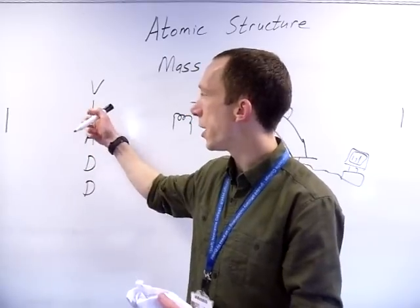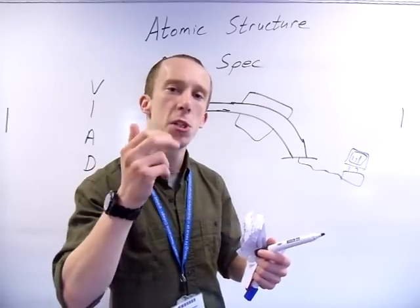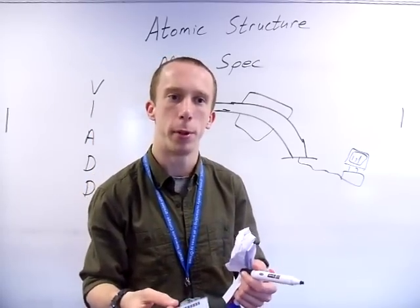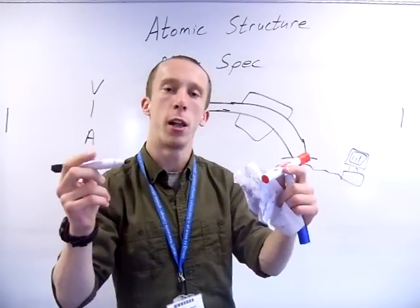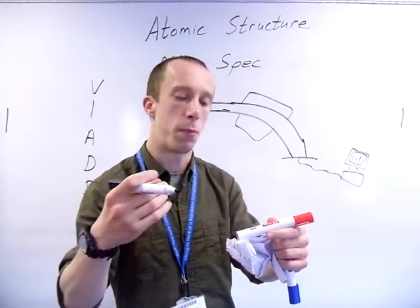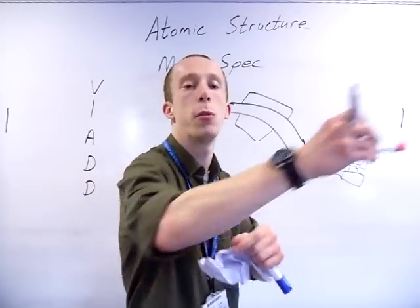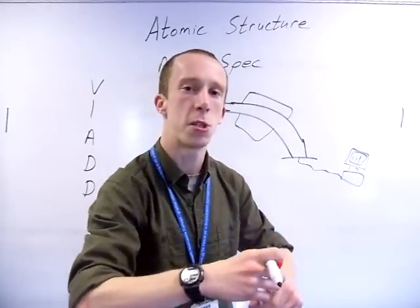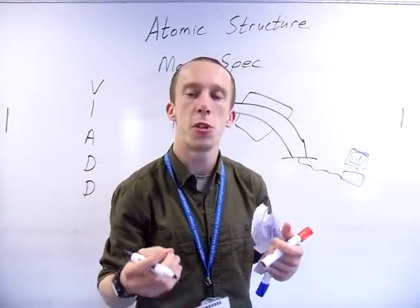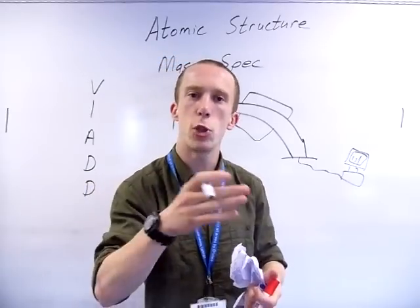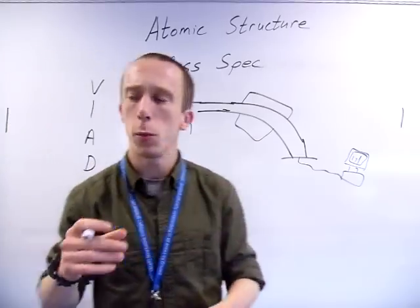Next stage: ionisation. This is using an electron gun, and what it does is bombard a beam of high energy electrons at your sample. These electrons come flying in, and the electrons in the outer shell of whatever you're putting through - atom, molecule, etc. - come so close that the repulsion is extremely high and they smack each other off into open space. With that you've turned your species into a single positively charged ion. They try to get the energy just right to make it a single positive rather than multiple positive. So we've vaporised it and ionised it.